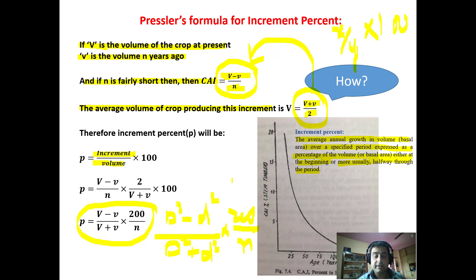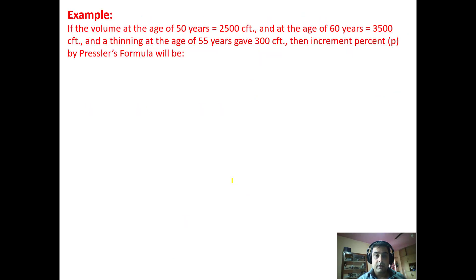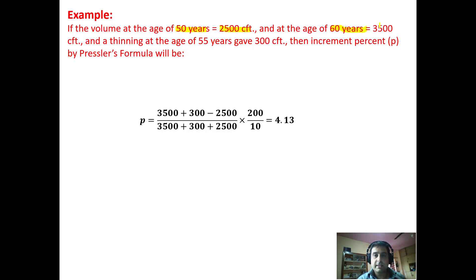For example, to understand Pressler's formula: the volume at age 50 years is 2500 cubic feet, at age 60 years it is 3500 cubic feet, and thinning at age 55 years gave 300 cubic feet extra. Find the increment percent by Pressler's formula.